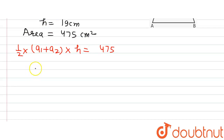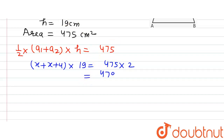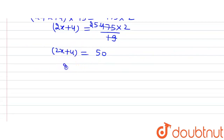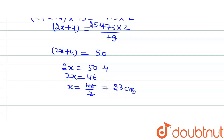Solving it: a1 is x and a2 is x plus 4, multiplied by h which is 19, equals 475. The 2 goes to the right-hand side, giving 475 multiplied by 2 divided by 19, which equals 50. So we have x plus x plus 4, that is 2x plus 4 equals 50. The 4 goes to the right-hand side: 2x equals 50 minus 4, that is 46. So x equals 46 divided by 2, which gives 23 centimeter.